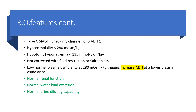Syndrome of inappropriate antidiuretic hormone is what will be addressed here — you can check my channel for that. Here, there is hyposmolality, meaning less than 280 milliosmol per kg. We'll be dealing with hypotonic hyponatremia with sodium level less than 135 millimoles per liter. You may have done everything like fluid restriction and salt, but it has not been corrected. Low normal plasma osmolality at 280 milliosmol per kg will trigger increased ADH at a lower plasma osmolality, but there will be normal renal function.